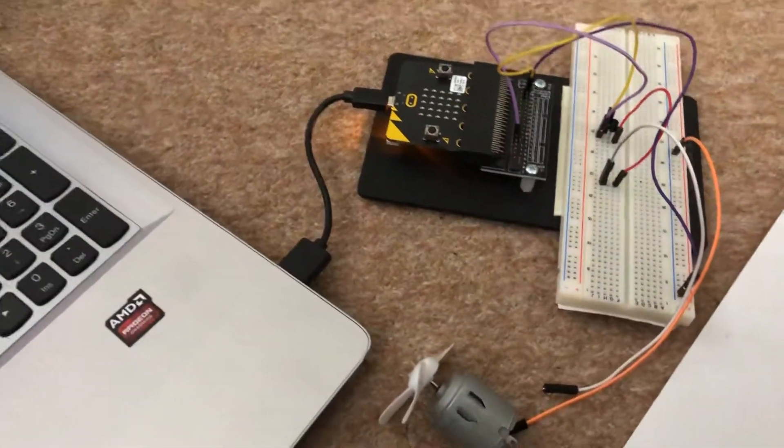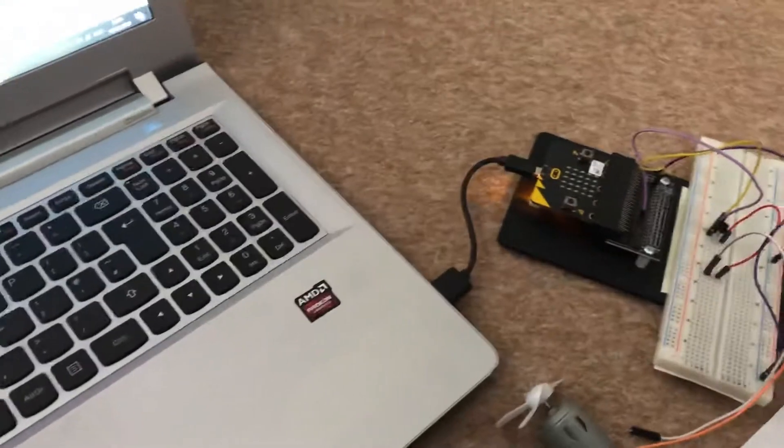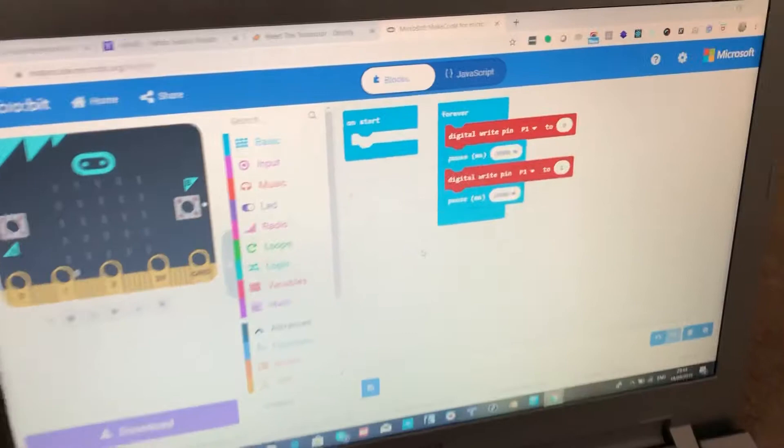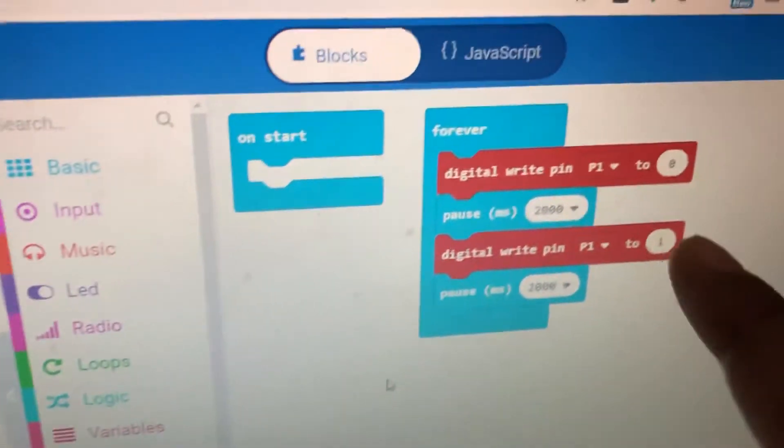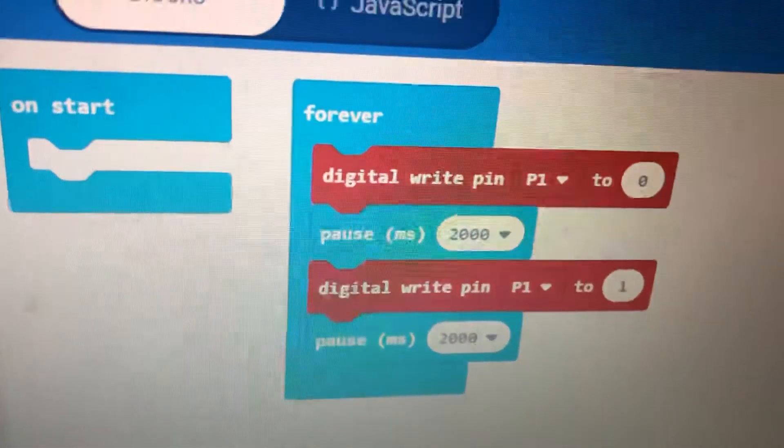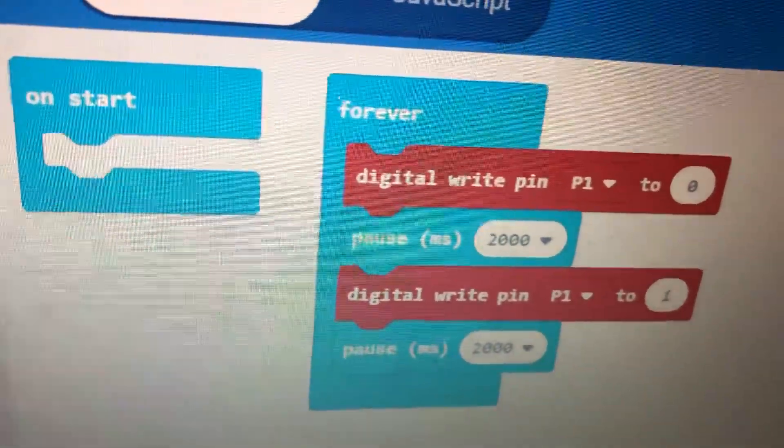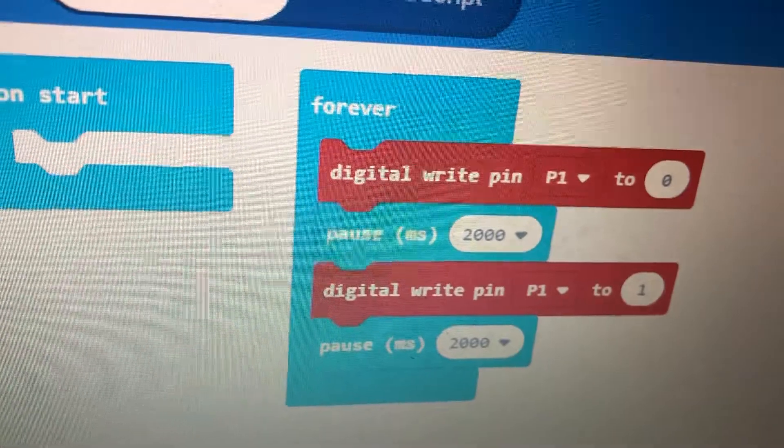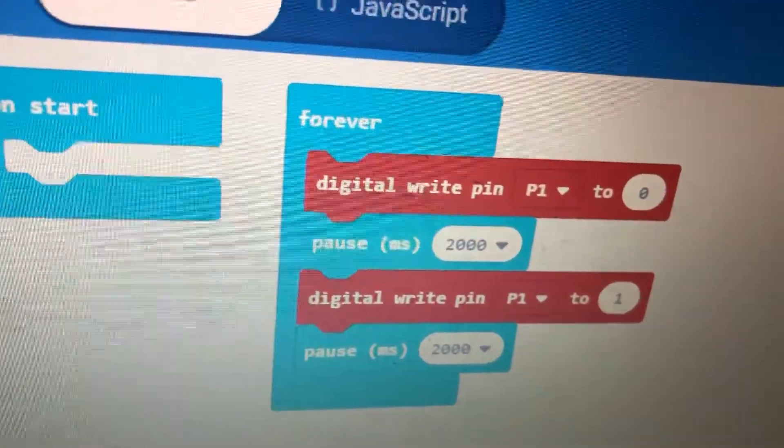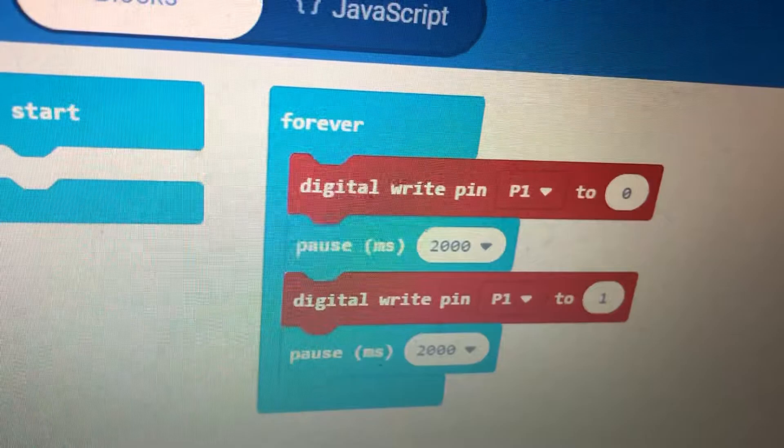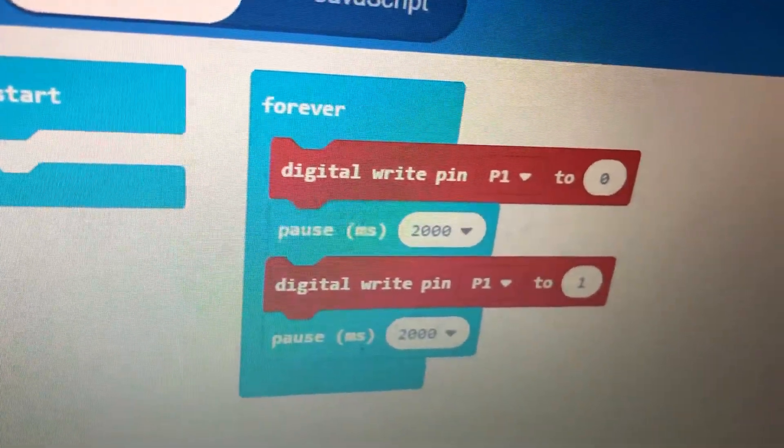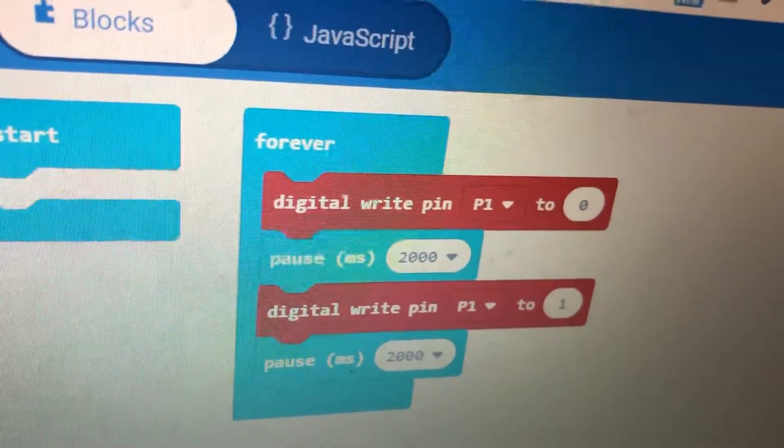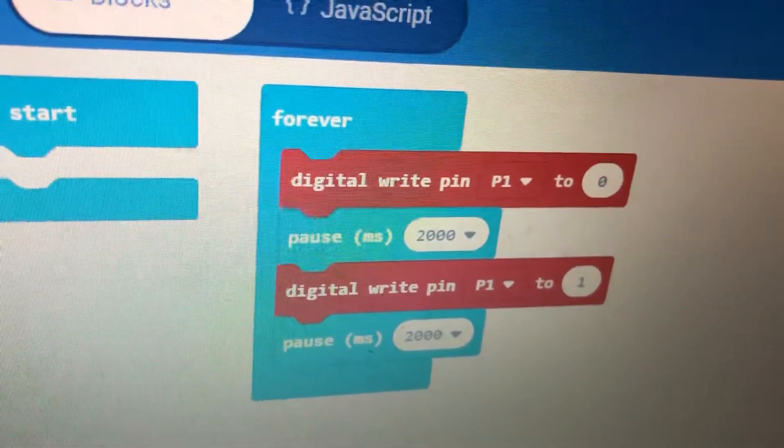We're doing this by manipulating how the electricity flows using the digital write pin block. In this forever loop, we're using digital write pin P1 to 0. This means we aren't giving pin 1 electricity to go through to the wire and let the 3 volts pass through, so that's why our motor stops. Then we wait for 2000 milliseconds or two seconds.